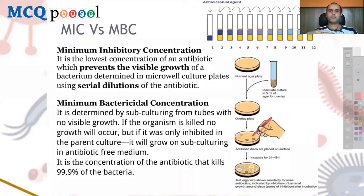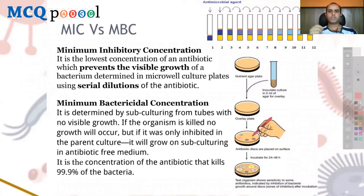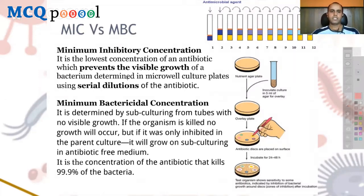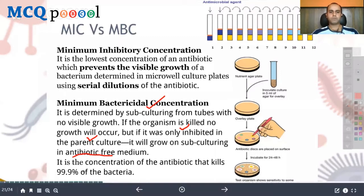For bacteria, instead of minimum effective concentration, we use minimum inhibitory concentration (MIC) and minimum bactericidal concentration (MBC). MIC is the lowest concentration of antibiotic that prevents visible growth of the bacterium, determined using serial dilutions of antibiotics in microbial cultures. MBC is the concentration that totally kills the bacteria — it kills 99.9% of bacteria — determined by subculturing tubes with no visible growth into antibiotic-free medium.